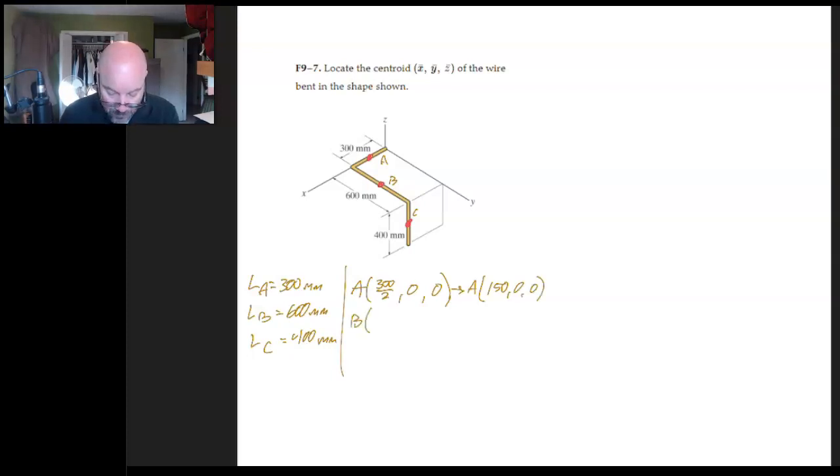And we'll do the same thing with B. So B, the x location for B is all at 300. The y location of that point is halfway out there, so we'll say 600 over 2. And then it's in the x-y plane also, so we'll have this. So that means B is going to turn into 300, 300, 0.